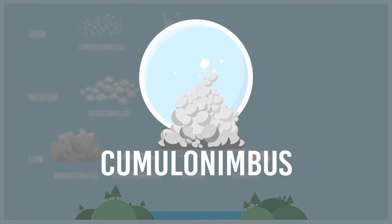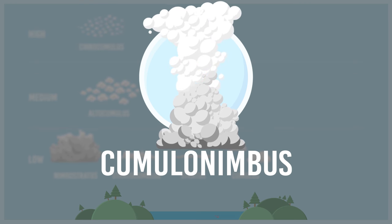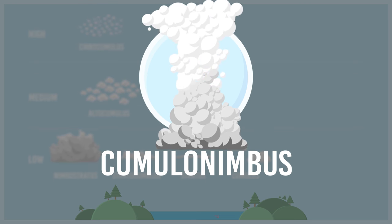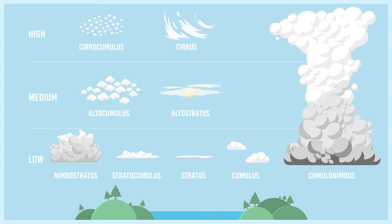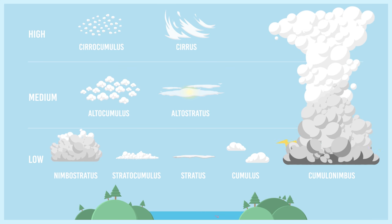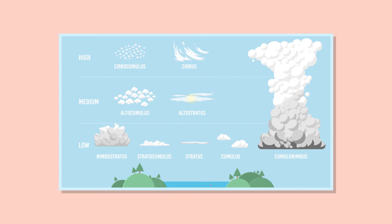Cumulonimbus is a dense cloud that has grown vertically. High winds often flatten the top of the cloud, so it resembles an anvil-like shape. The base will look very dark and ominous. These clouds are known as thunderstorm clouds, as they often bring bad to severe weather and carry lightning.